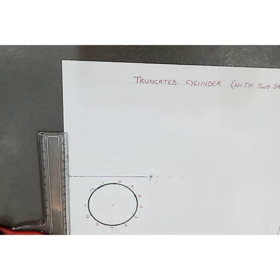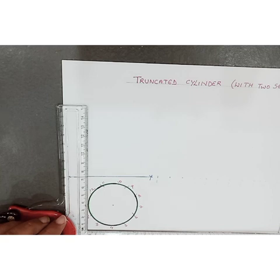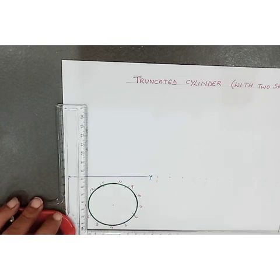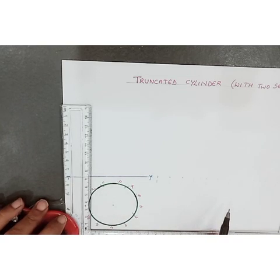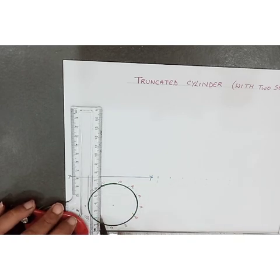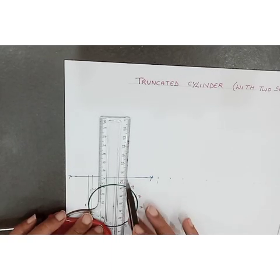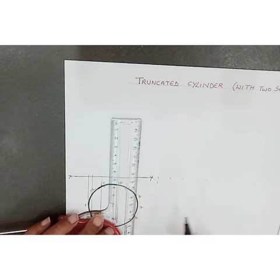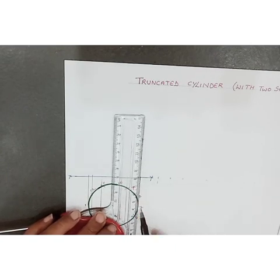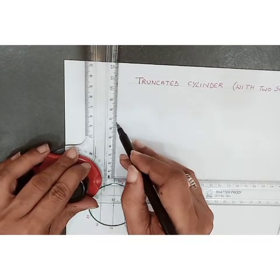After dividing the circle into 12 parts, give numbering: 1, 2, 3, 4, 5, 6, 7, 8, 9, 10, 11, 12. Then draw projectors for drawing the front view. Note that 2 and 12 coincide, 3 and 11 coincide, 4 and 10 coincide, 5 and 9 coincide, 6 and 8 coincide, and 7 is a single point. The given axis height is used to draw the front view.